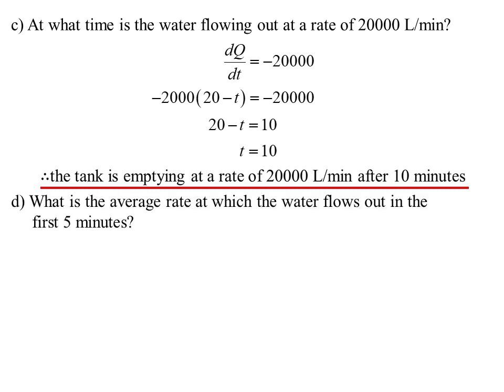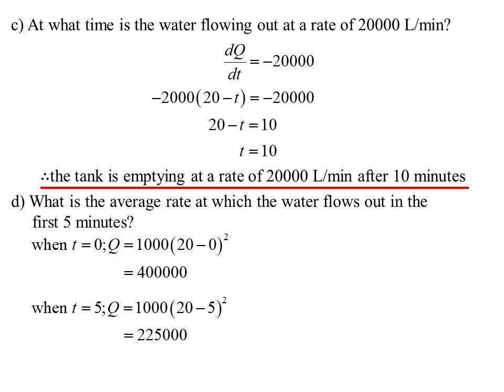Sometimes they do ask about averages, so what is the average rate at which the water flows out? Well if it's average rate, then we've got to pick the two points, and it's saying in the first five minutes. So I need to know what it is to start off with, sub that in, t equals zero, we get 400,000. But how much after five minutes? Well after five minutes, sub that in, we got 225,000.